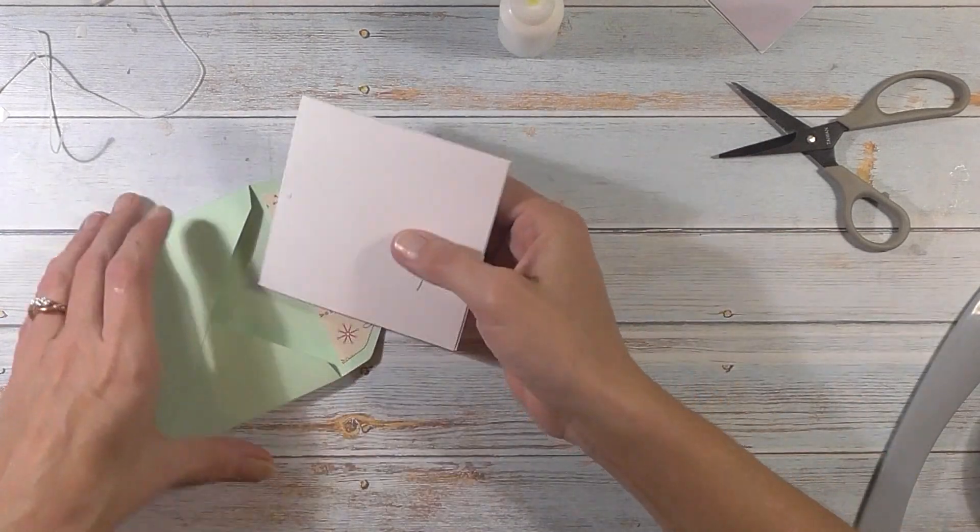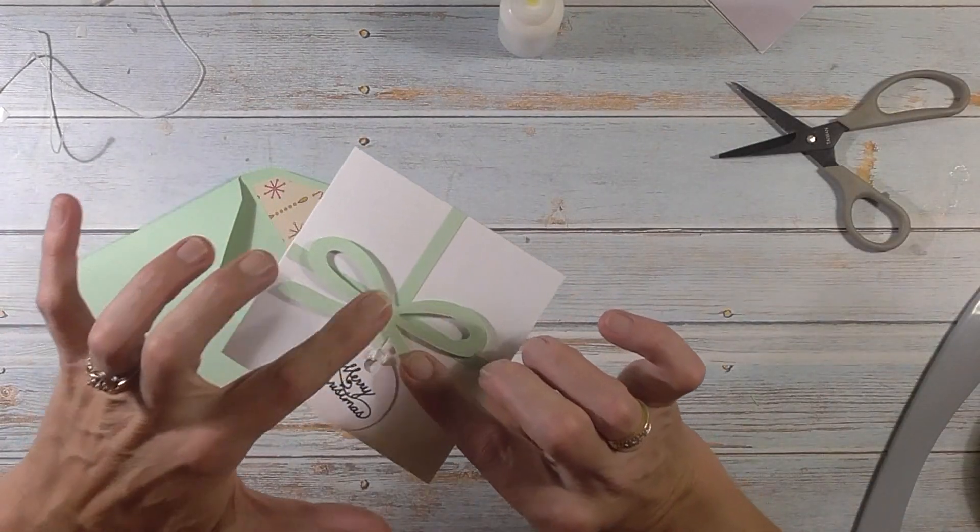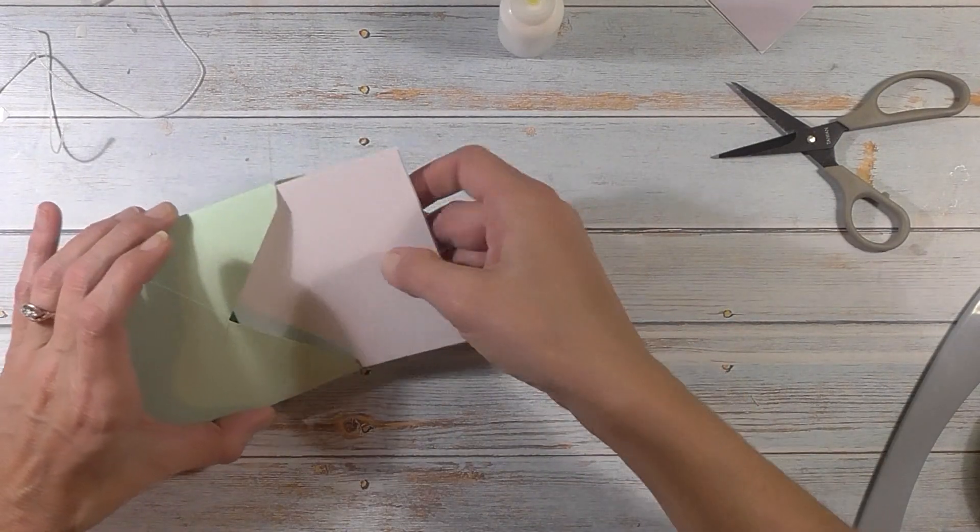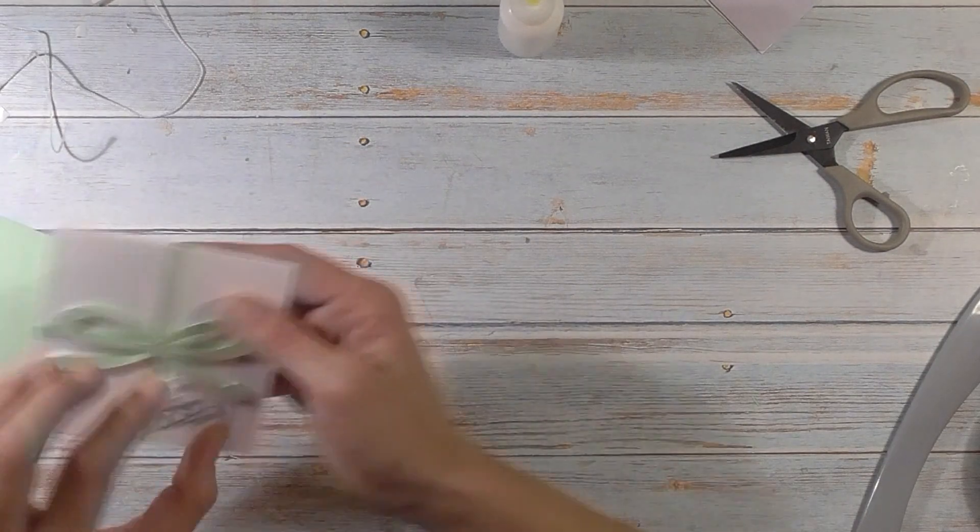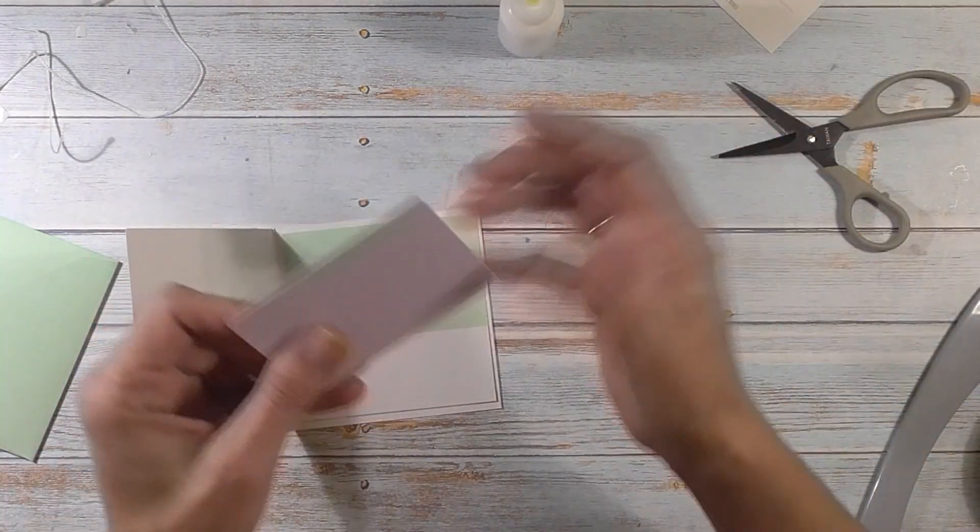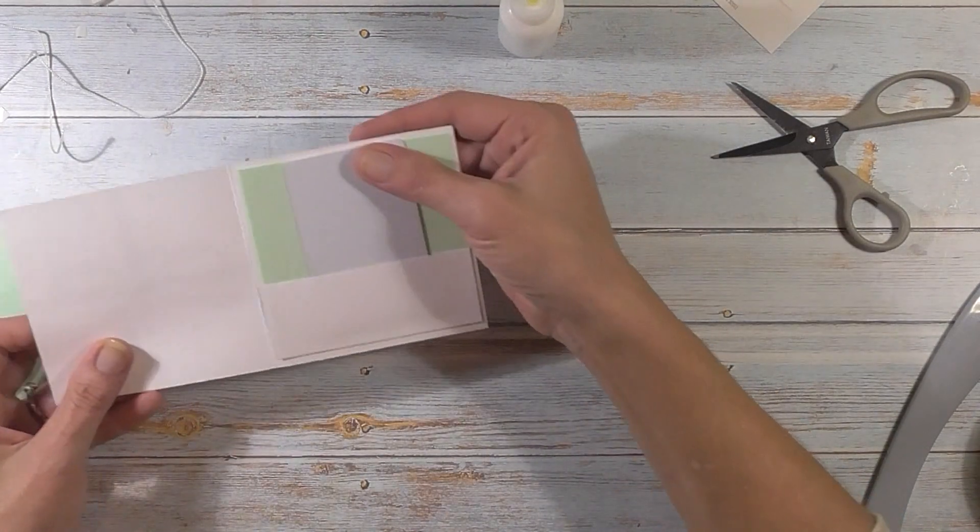Let's go ahead and see if this fits in here. I have a faux square. I always put the side with the dimension facing down. And it fits in there nicely. Now let's try our gift card pocket on the inside. Yep, and that fits in there just perfect.